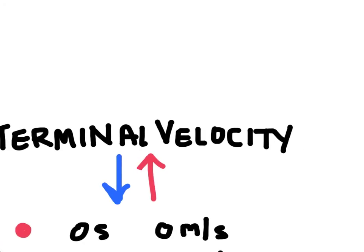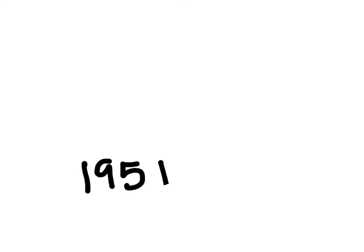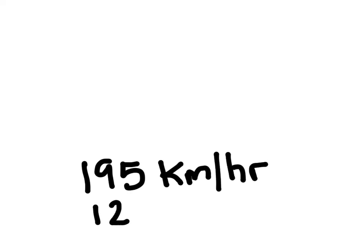For a human skydiver, the terminal velocity is going to be 195 kilometers per hour, or 122 miles per hour. This is the maximum speed or velocity that a human could reach while free falling. A human could travel even faster if they were to crunch up into a ball to reduce air resistance, but this is the terminal velocity for a standard free-falling human.